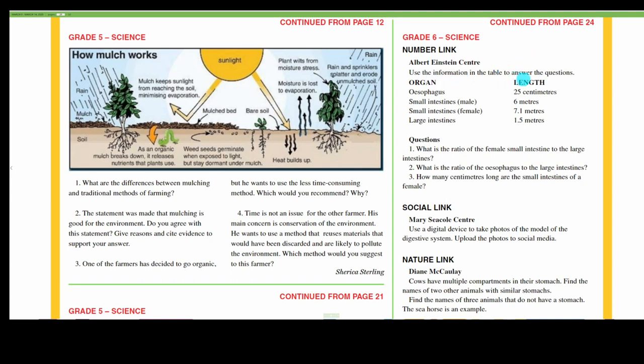Albert Einstein Center. Use the information in the table to answer the questions. So we have organ, we have length. Esophagus: 25 centimeters. Small intestine in a male: 6 meters. In a female: 7.1 meters. Large intestines: 1.5 meters. Now here are the questions. What is the ratio of the female small intestine to the large intestine?